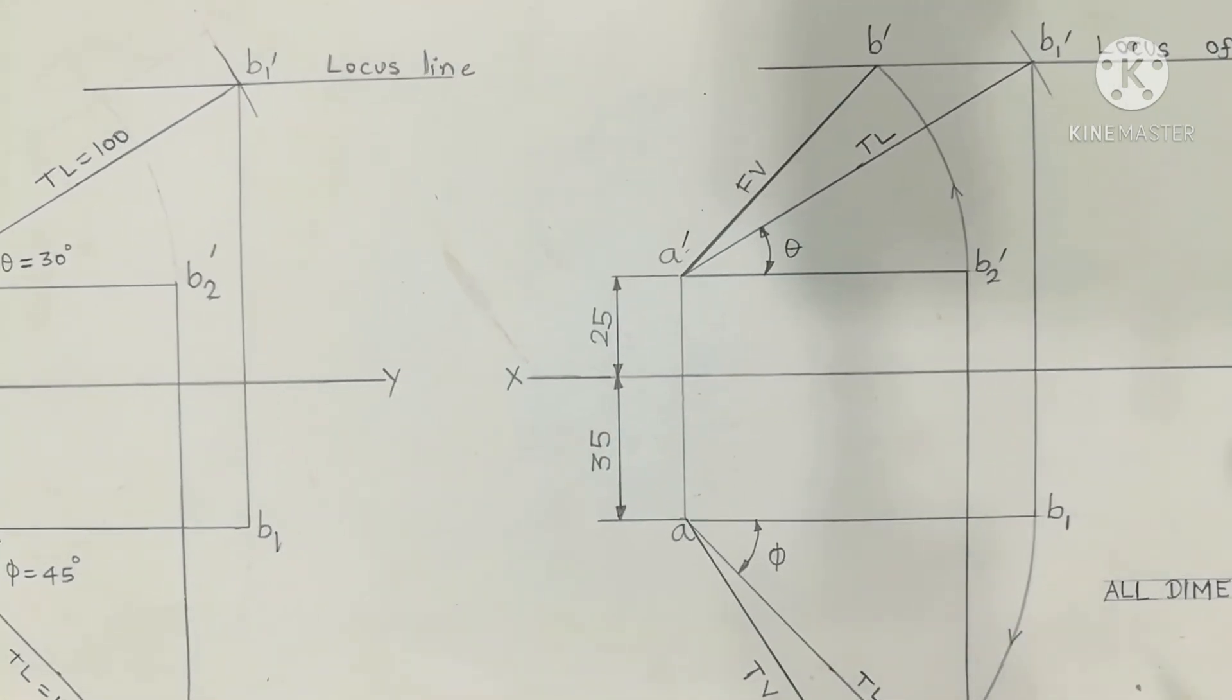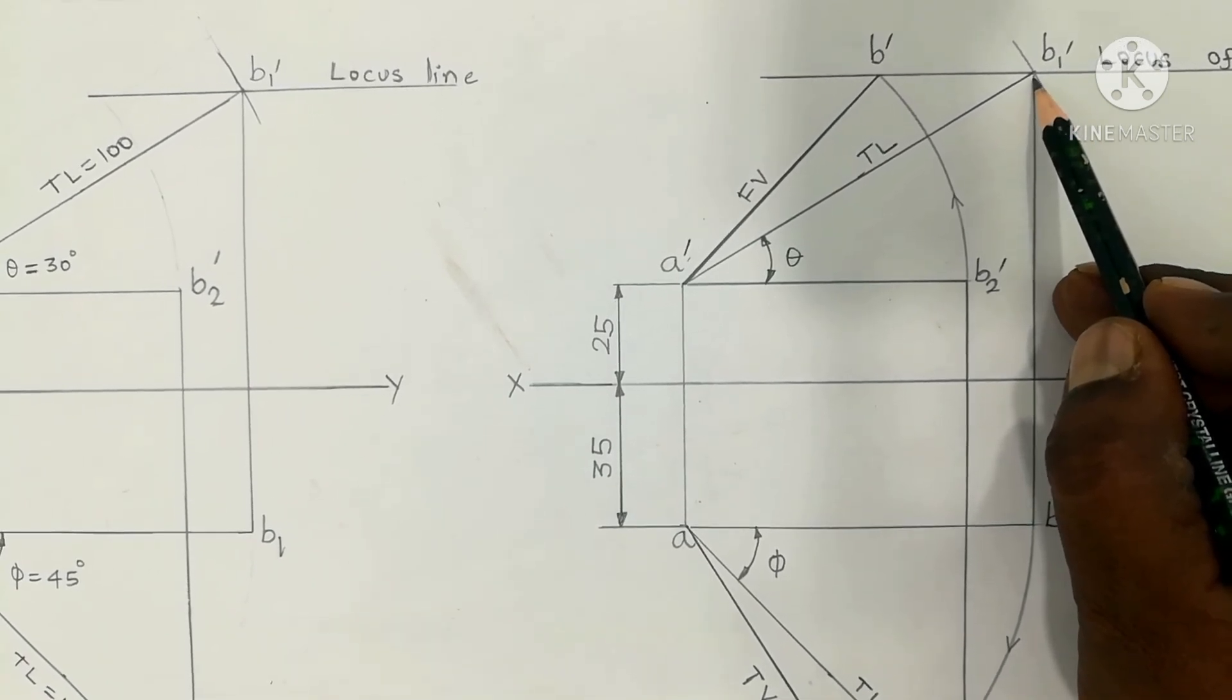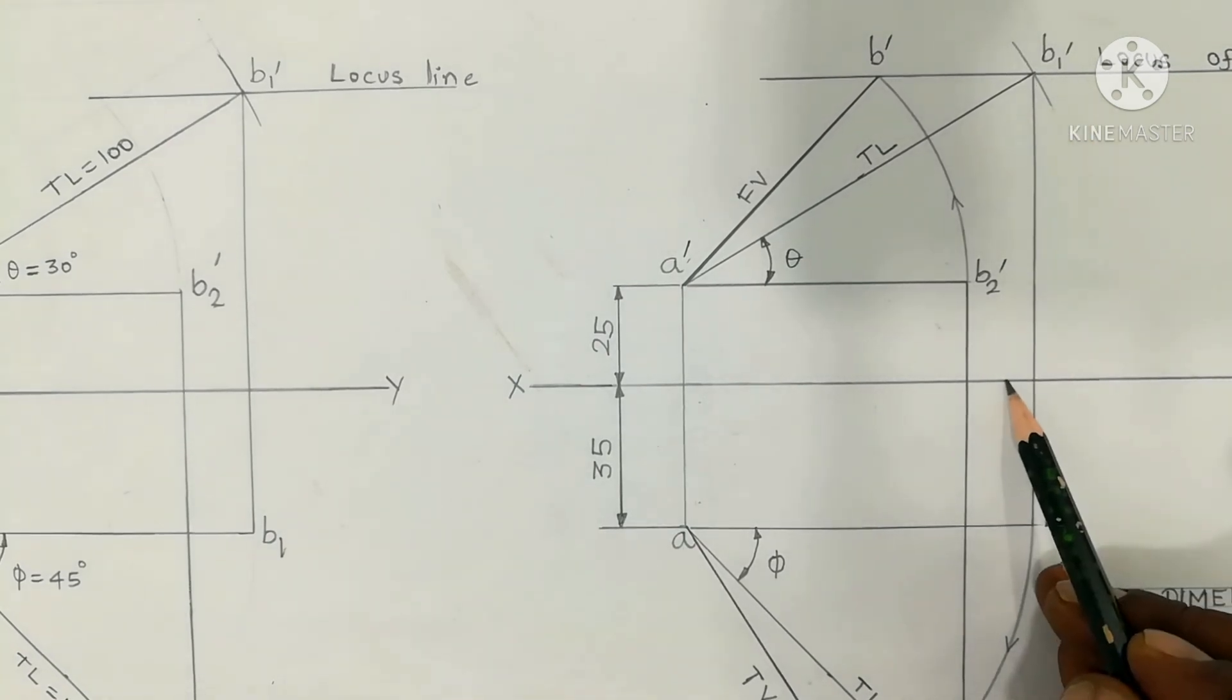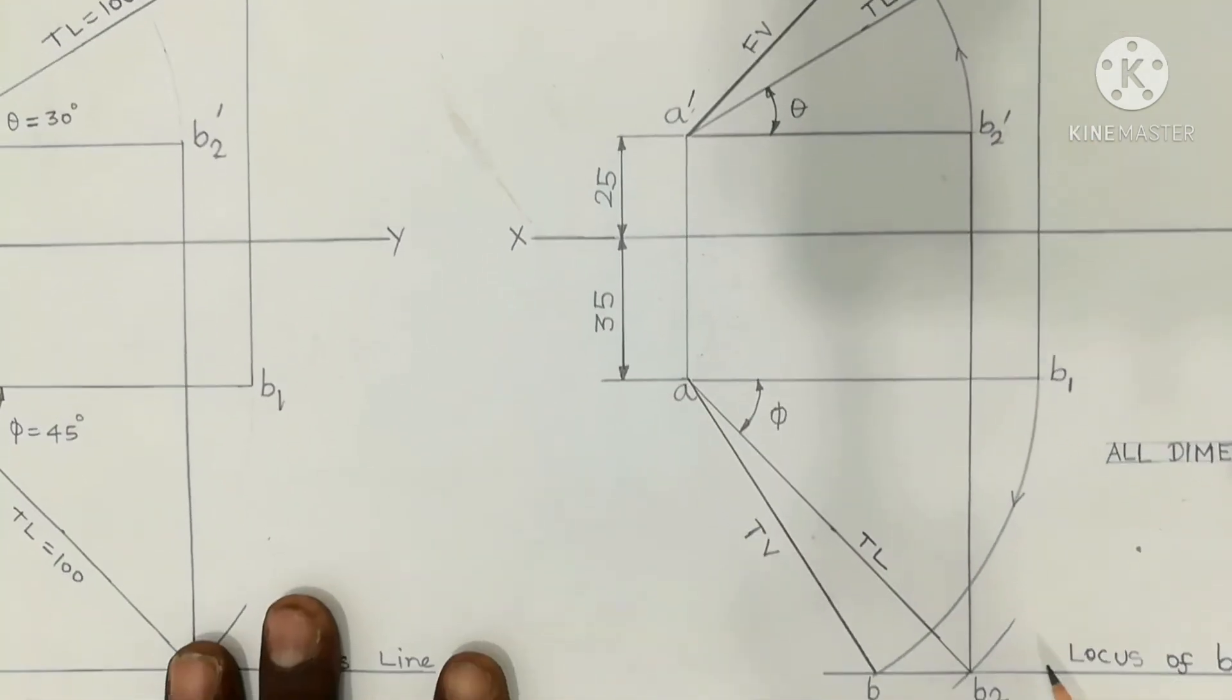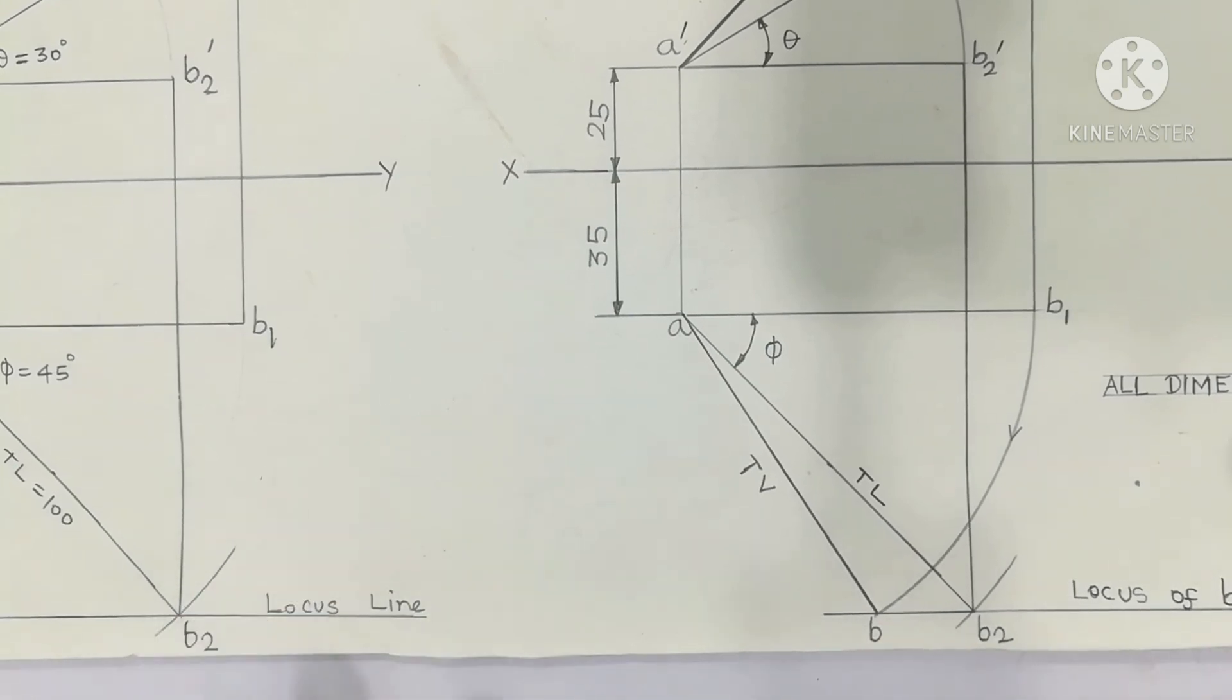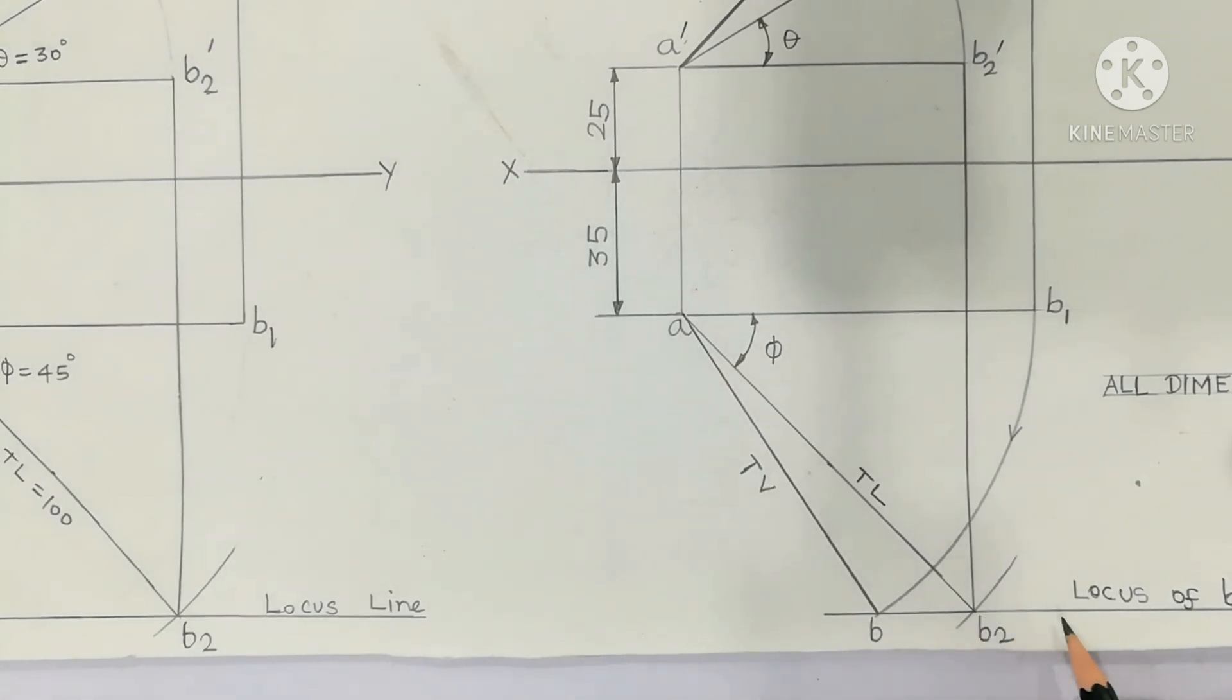Next, consider your locus line drop passing through B1 prime parallel to XY. That is B2. Here is a common line which has different points. This is called locus line parallel to XY passing through B2.